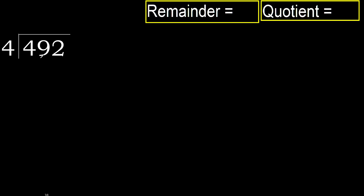492 divided by 4. 4 is not less, therefore with 4. 4 — multiply by which number is nearest to 4, but not greater.